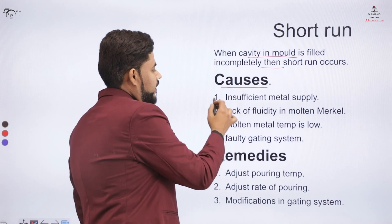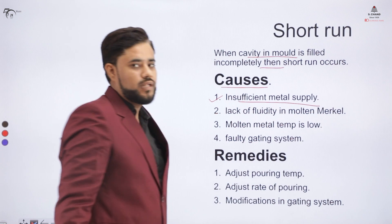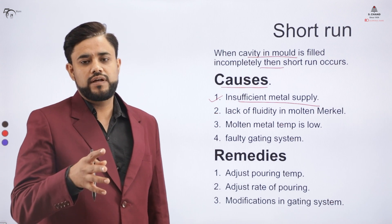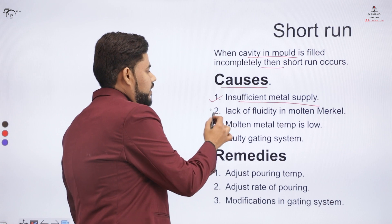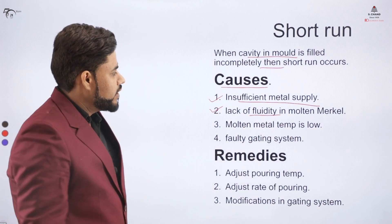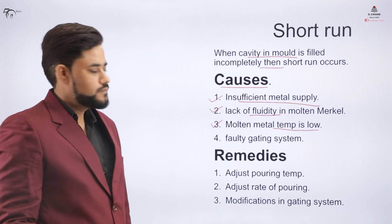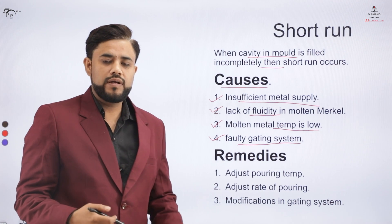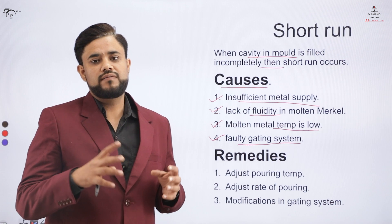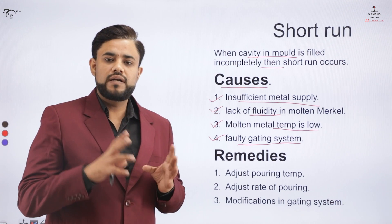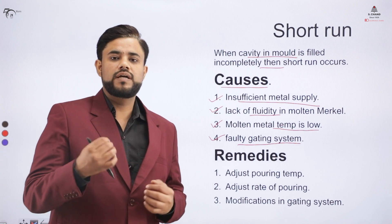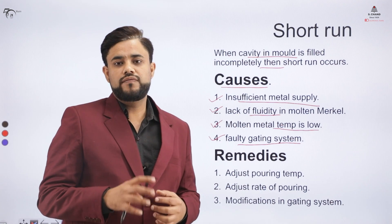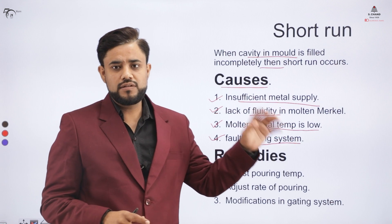Causes of short run: first, if we don't supply sufficient material; second, lack of fluidity in the molten material; third, the molten material temperature is too low; and fourth, a faulty gating system. The gating system includes a pouring basin, runner, and riser — if this combination or gate is faulty, it leads to a short run defect.